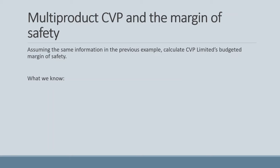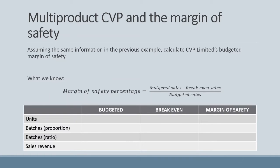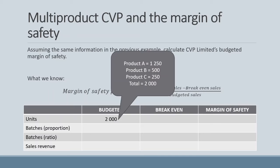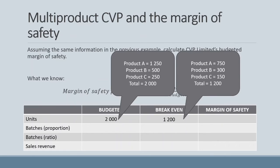Because we are dealing with budgeted information, the margin of safety is calculated as budgeted sales less breakeven sales, all divided by budgeted sales. Using units, the budgeted units are the sum of unit sales for each product, totalling 2,000 units. The breakeven sales are the sum of individual breakeven units. While this method is conceptually incorrect — you cannot add one unit of product A with one unit of product B — it does arrive at a margin of safety of 40%.